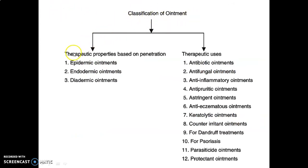Classification of ointments has two classes: therapeutic properties based on penetration, and therapeutic uses. Therapeutic properties based on penetration are classified into three types: epidermic ointments, endodermic ointments, and diadermic ointments, according to the layer of skin.